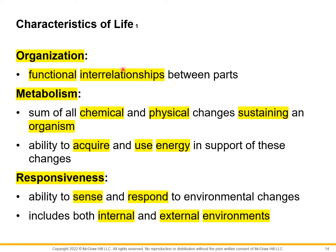Next is metabolism — the sum of all chemical and physical changes sustaining an organism, whether through the use of enzymes, creation of proteins, or other processes. Any chemical and physical changes a cell or tissue undergoes to continue living is a form of metabolism. For humans, this includes the ability to acquire and use energy — specifically ATP or adenosine triphosphate — to support these reactions.